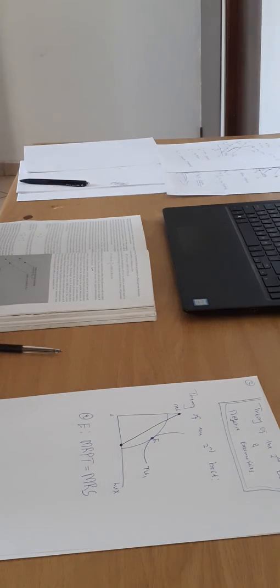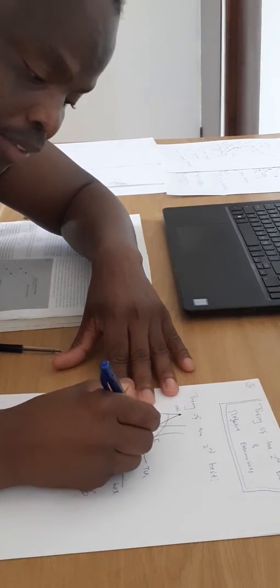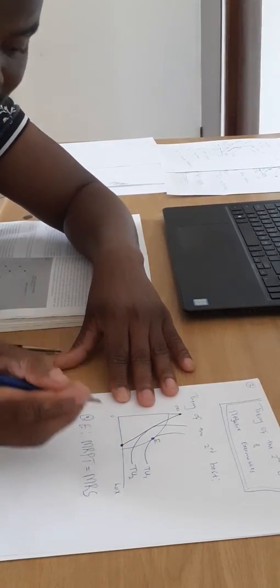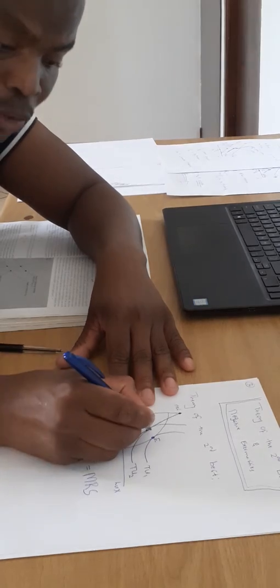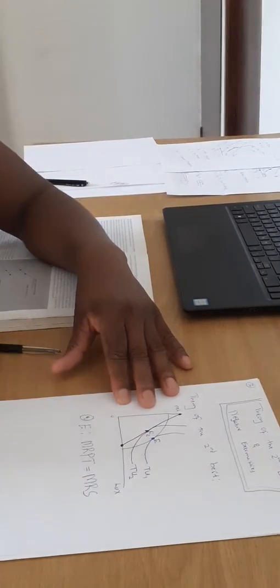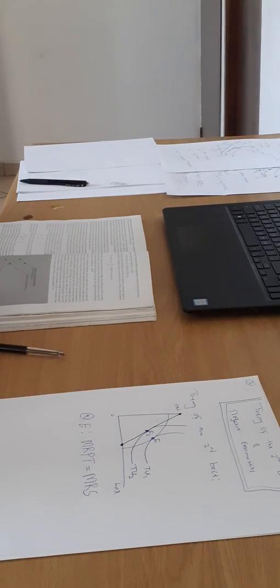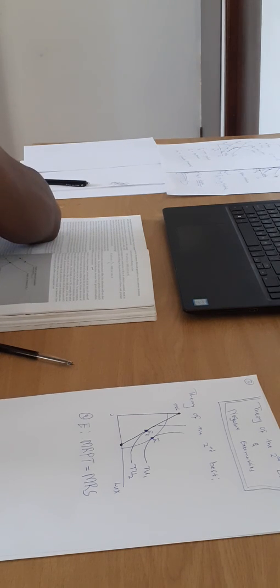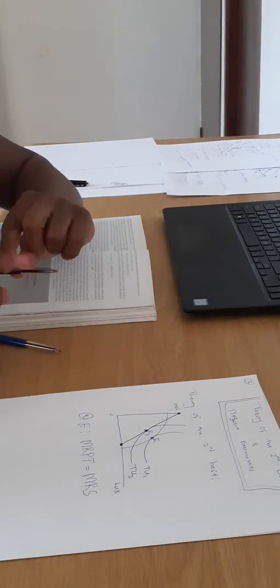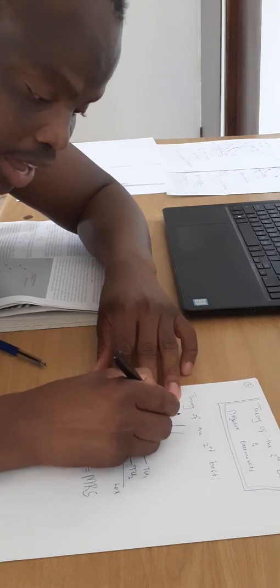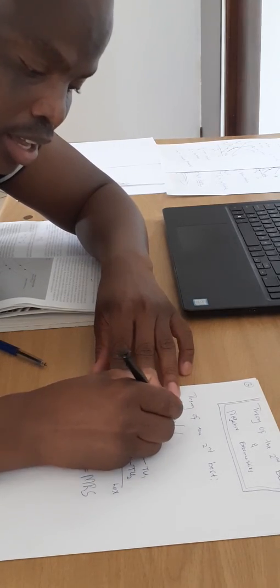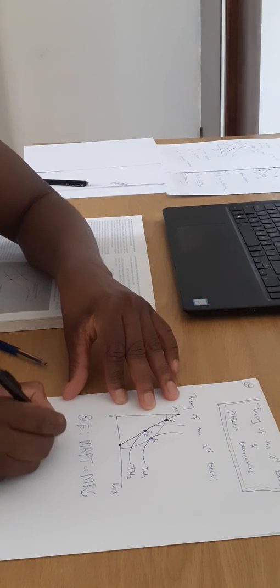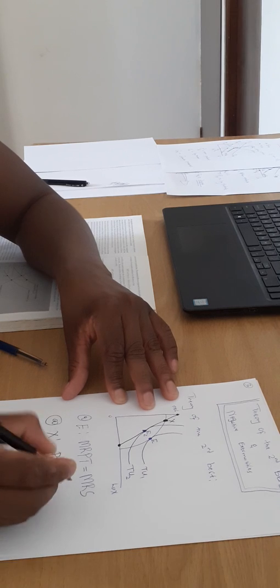We can see that this budget line does not touch the indifference curve. So I must draw a lower utility curve, total utility two. That gives us a new equilibrium at E2, which is inside the production possibility curve. But the firm has the opportunity to produce at point X.